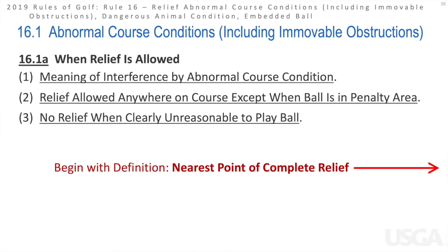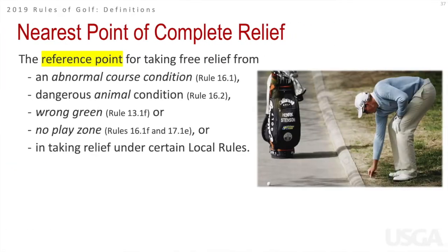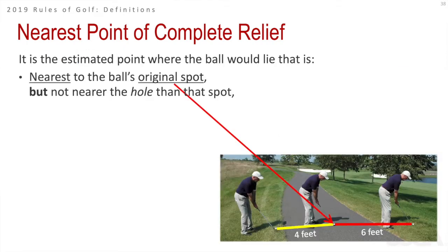Before talking about when relief is allowed, we need to cover the nearest point of complete relief, which is a very useful and important term. It is the reference point for taking relief from abnormal course conditions, dangerous animal conditions, a wrong putting green, no play zones, or certain local rules. It is the estimated point where the ball would lie that is nearest to the original spot, but not nearer the hole.